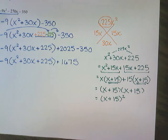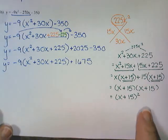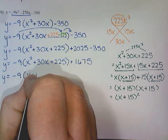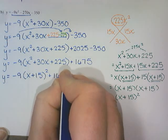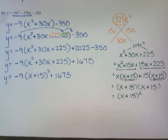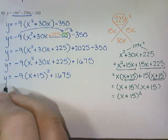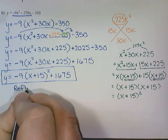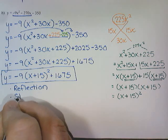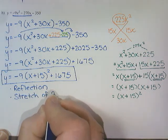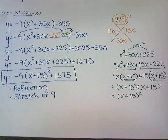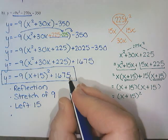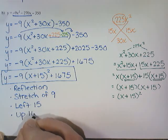So all I need to do is take my x squared plus 30x plus 225 and replace it with x plus 15 squared to get negative 9 times x plus 15 squared plus 1,675. Now the last thing it asks me to do is state the transformations. In the A position we have negative 9. That negative is a reflection. The 9 means it's a stretch of 9. Inside the bracket the plus 15 means we're going left 15. And the 1,675 is where my K normally would go, so we're going up 1,675.